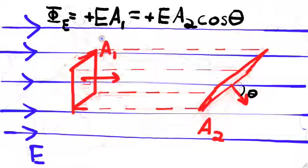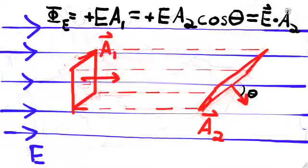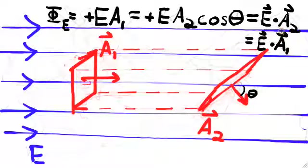We can write the definition for flux in an abbreviated way by assigning to each surface a vector. The magnitude of the vector is equal to the area of the surface, and the direction is the same as that of the normal. With those conventions, we see that the flux through the surface is easily written as the dot product of the electric field and the vector associated to the surface.